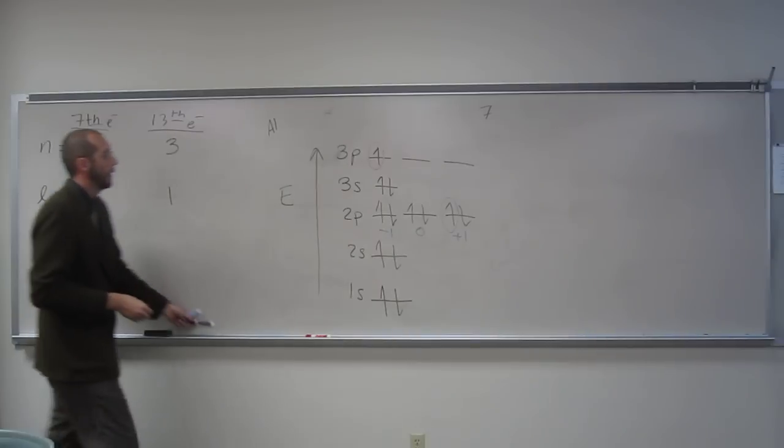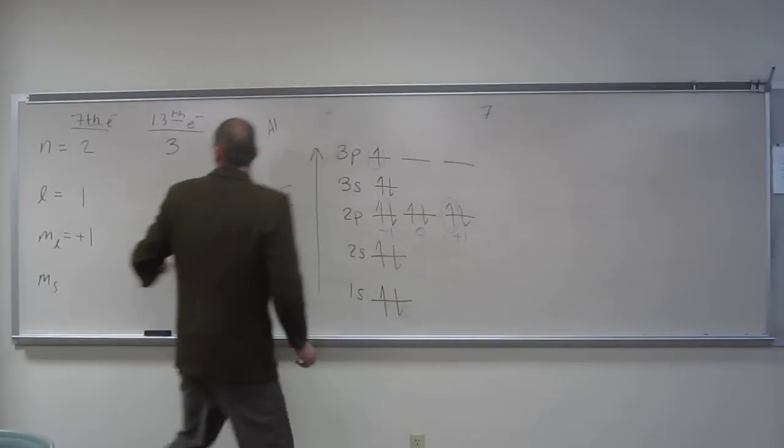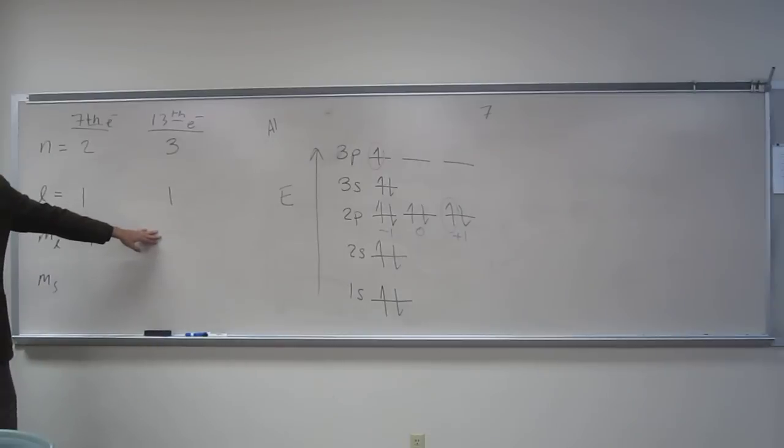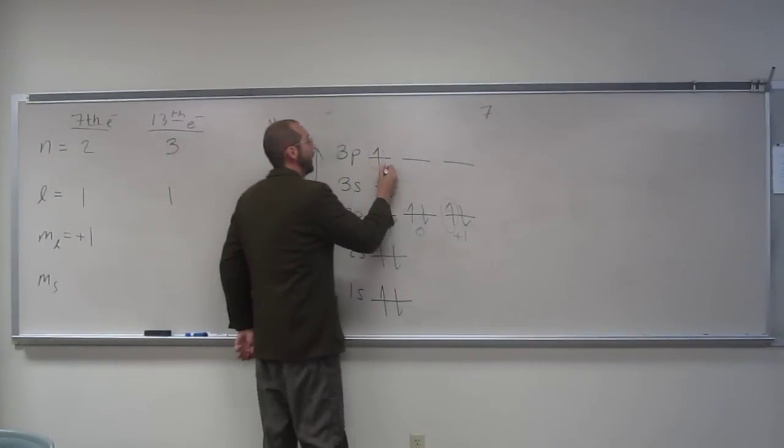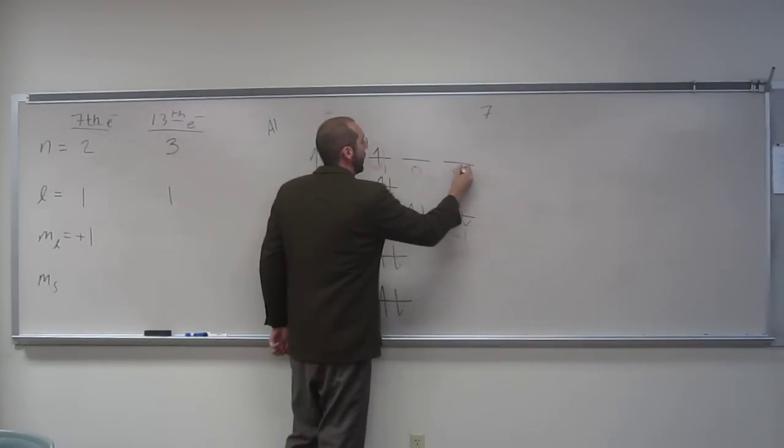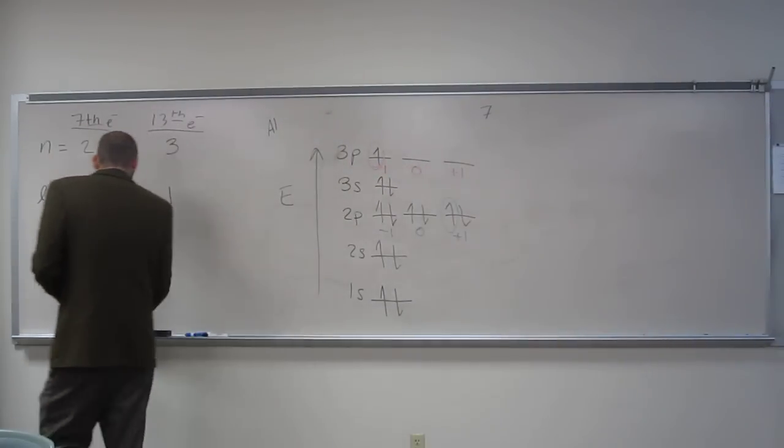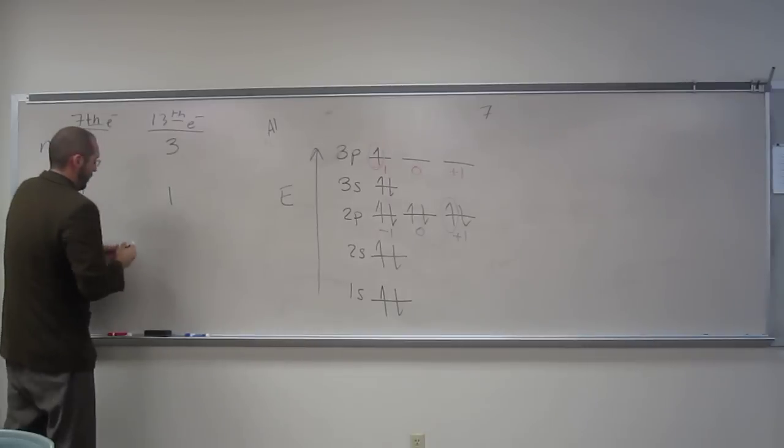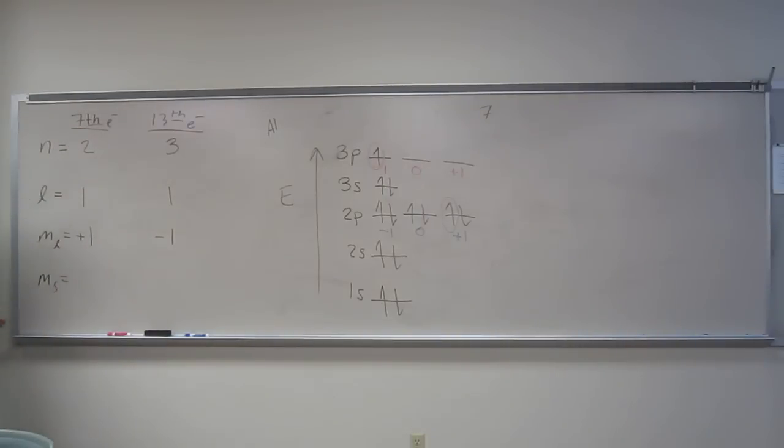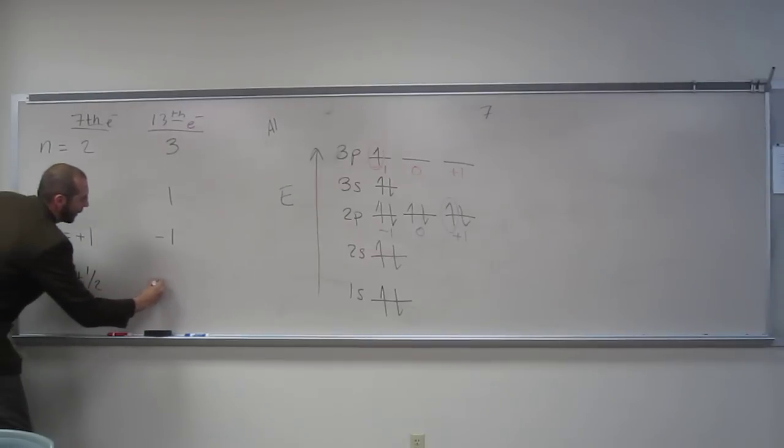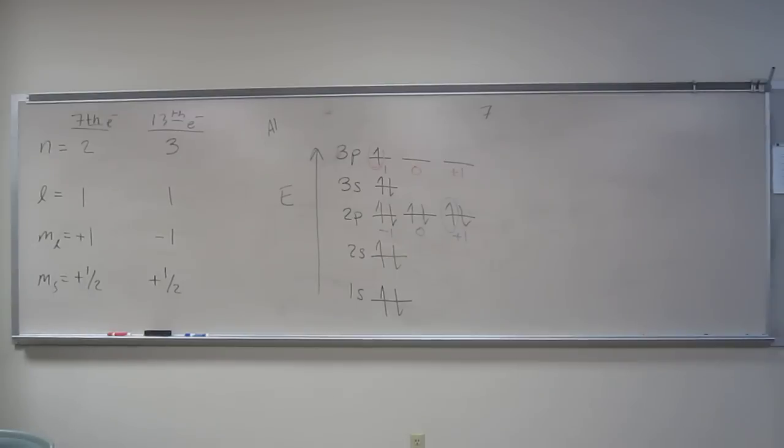And then, here, what are our options again? Negative one, zero, and positive one. But in this case, what is it? Negative one. Very good. And m sub s for both of these? Plus one half. Because, again, we're designating the first one in as the plus one.